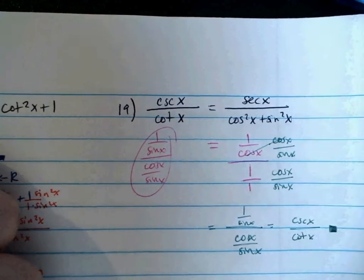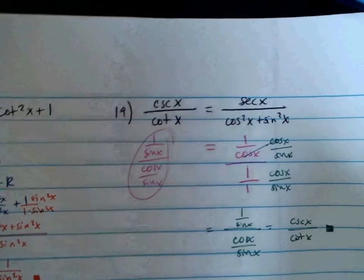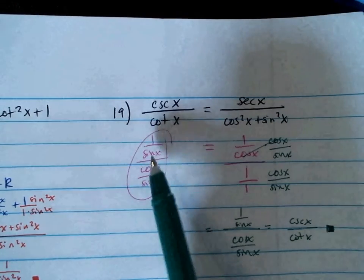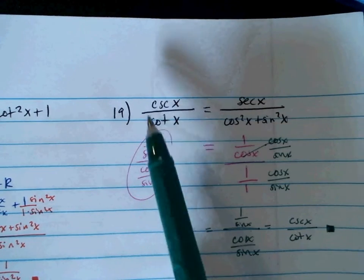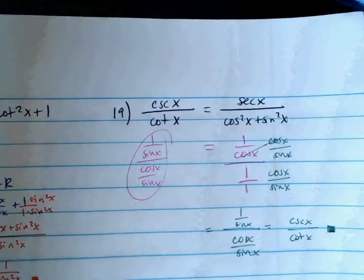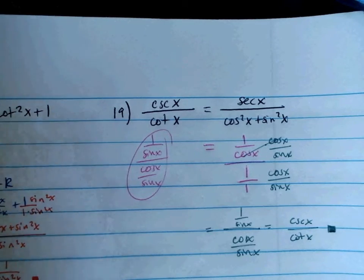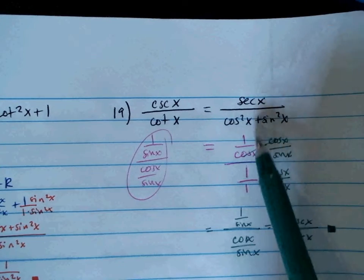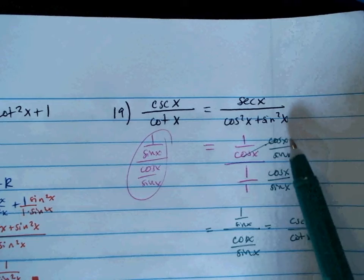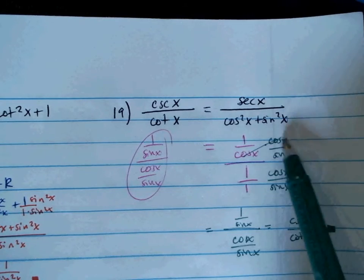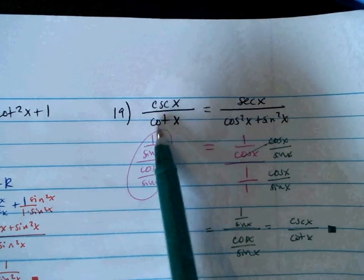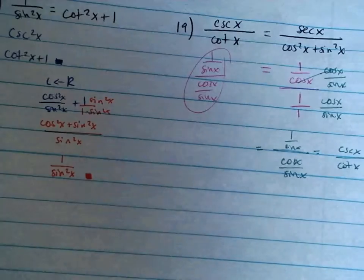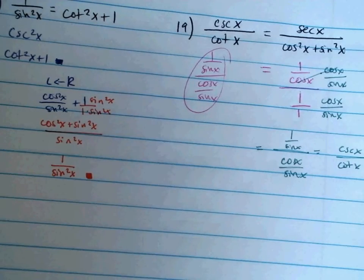That was interesting. I had to use my goal — cosecant over cotangent — in order to figure out what to do on this side. I knew it was 1 over cosine over 1, and so if I multiply by cotangent on top and bottom, I get cotangent in the denominator, and then the numerator falls into place.